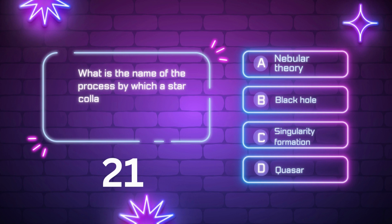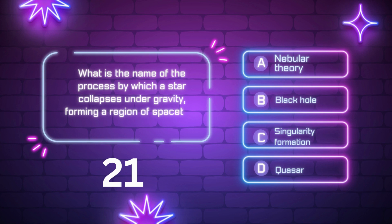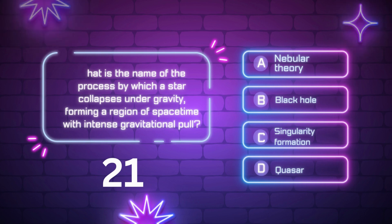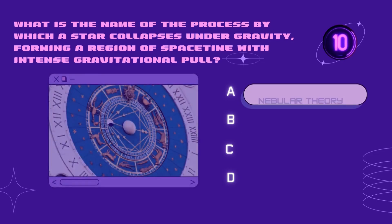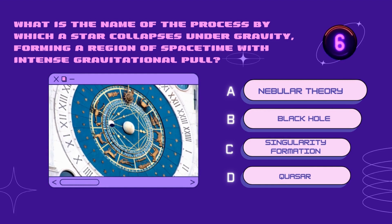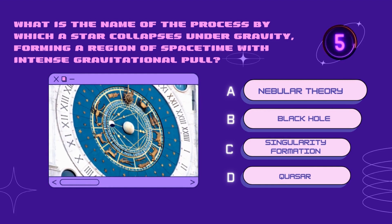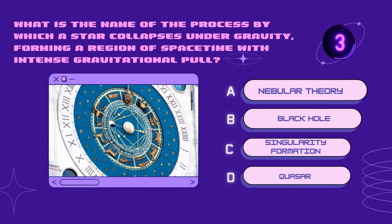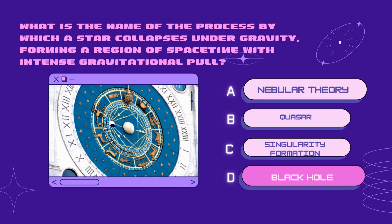What is the name of the process by which a star collapses under gravity, forming a region of space-time with intense gravitational pull? Nebular theory, singularity formation, black hole, quasar. Your time starts now. Right answer is black hole.